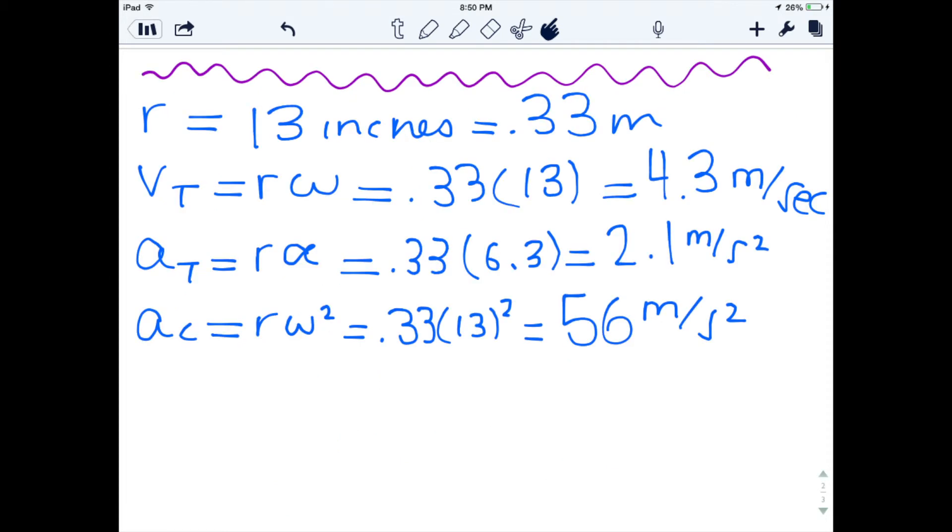Finally, as in before, we're going to calculate the tangential velocity, tangential acceleration, and centripetal acceleration. However, none of these are possible without knowing the radius, so it is worthwhile to note that the radius of the baton is 13 inches, which is equal to 0.33 meters. Thus, the tangential velocity is 4.3 meters per second, tangential acceleration is 2.1 meters per second squared, and the centripetal acceleration is 56 meters per second squared.